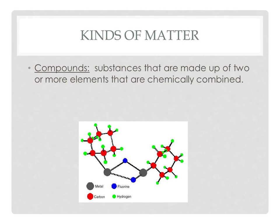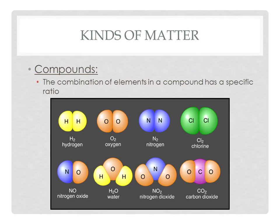Compounds are another way that scientists classify matter. If a substance is made up of two or more elements that are chemically combined — meaning there is a bond holding them together — then it is classified as a compound. One characteristic of compounds is that they are a combination of elements in a specific ratio. For example, water is always H2O: always two hydrogens attached to one oxygen. If one of those hydrogens is missing, it's not water.